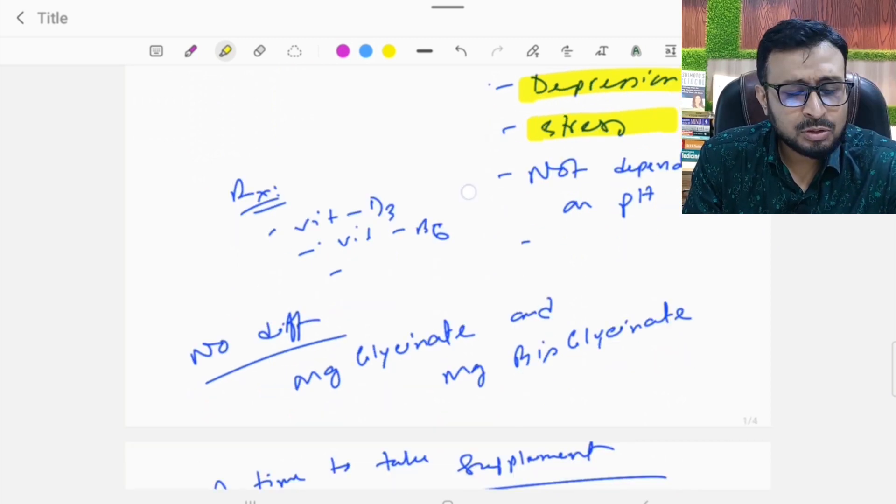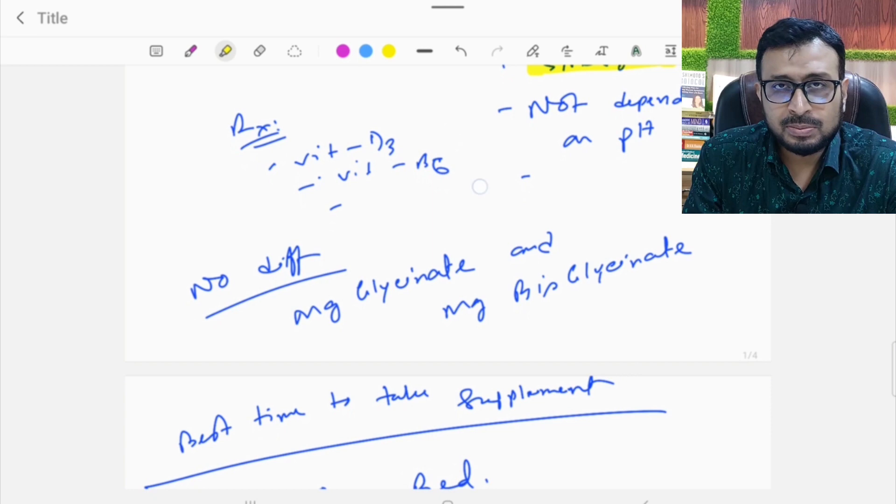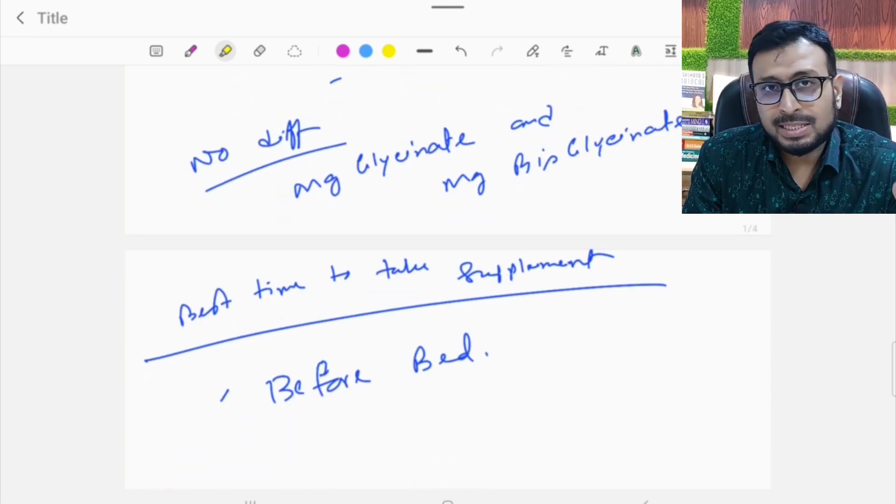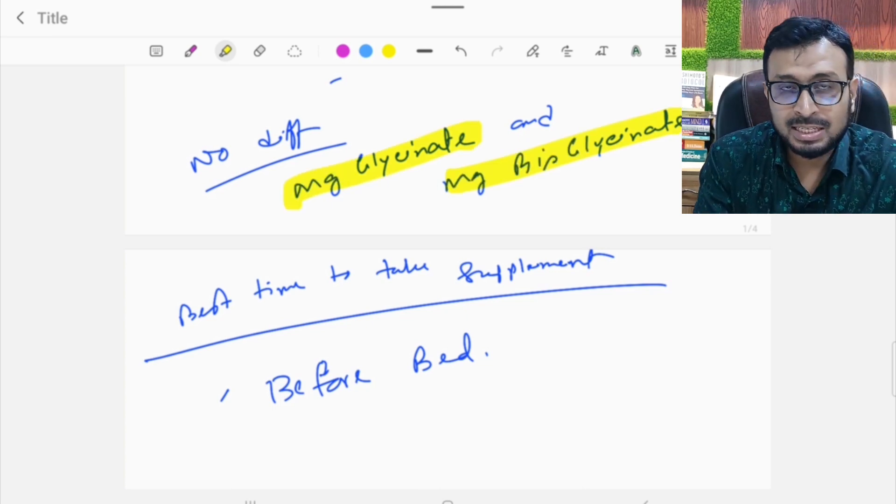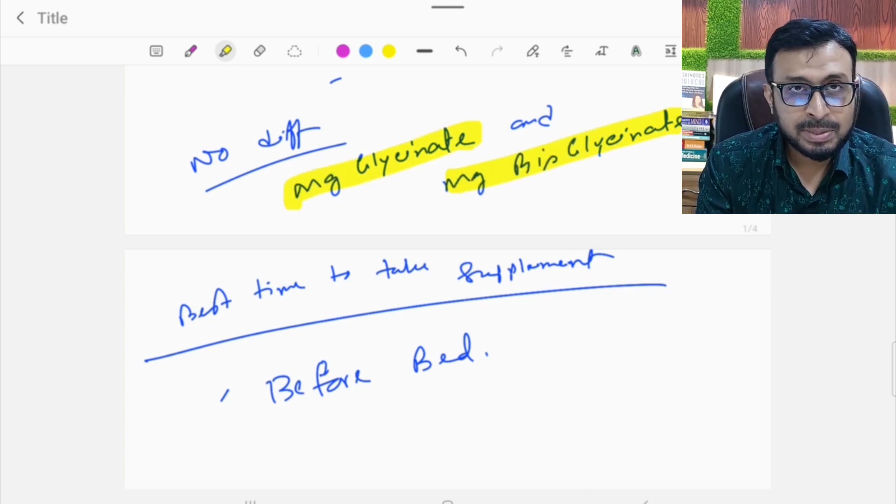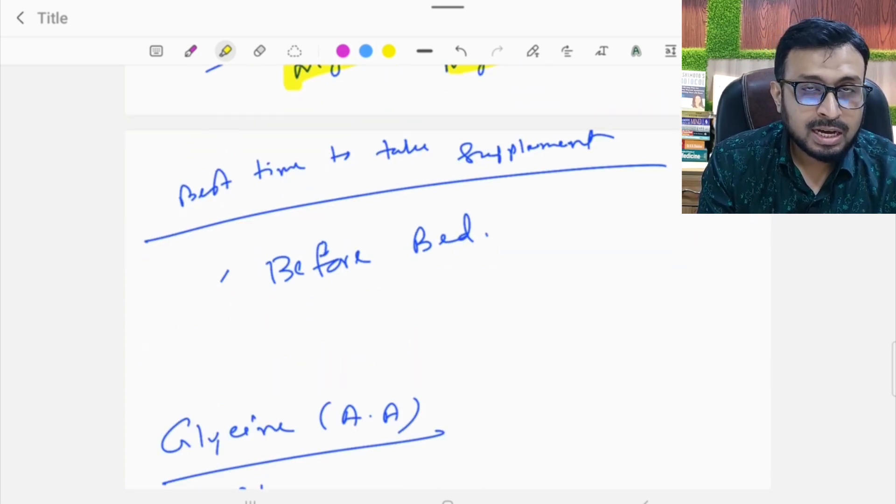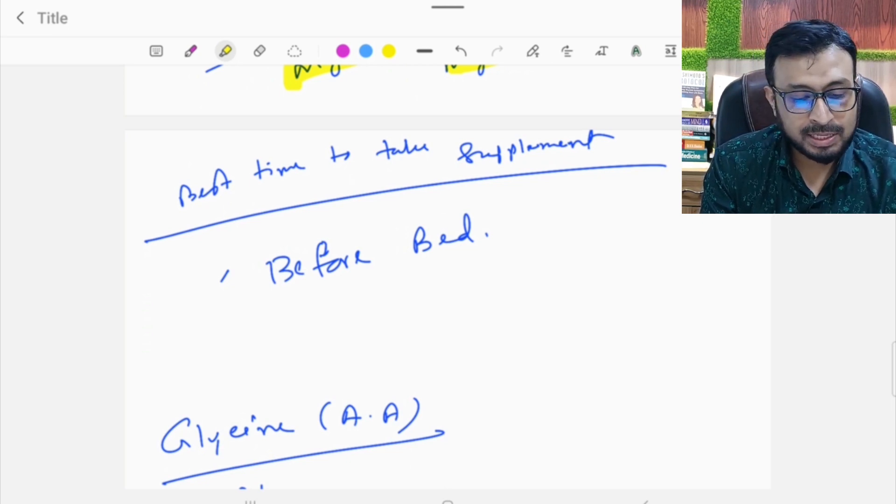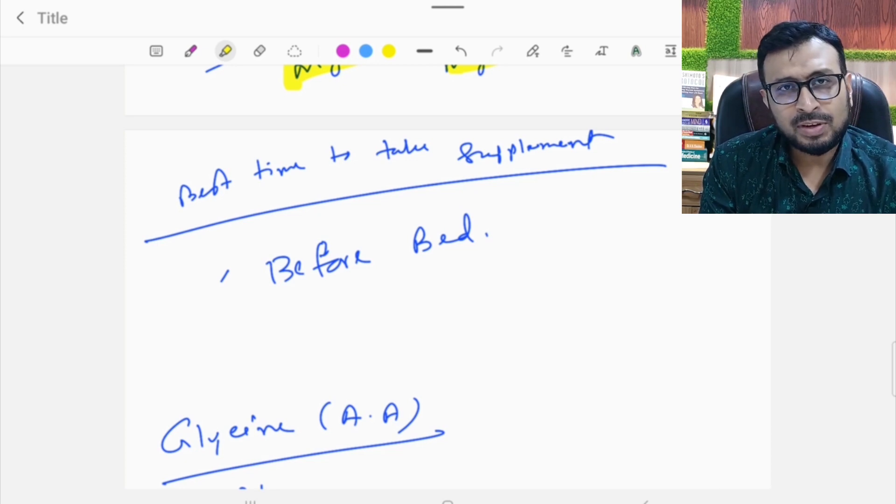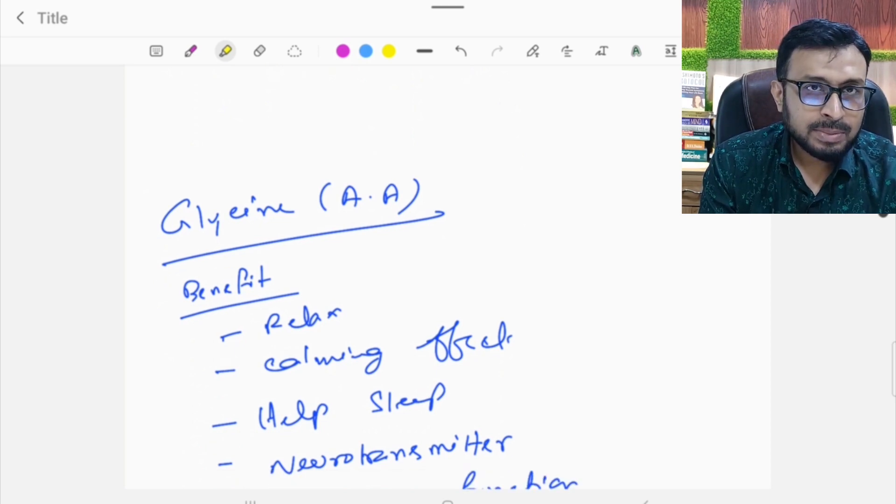This is important for stress and anxiety. It works with Vitamin D3, Vitamin B6, etc. Magnesium glycinate is the same as bisglycinate. These supplements have been confused, but we have known that magnesium glycinate and bisglycinate have no difference. The recommended dose is 100-500 mg. If blood levels are low, supplementation helps.